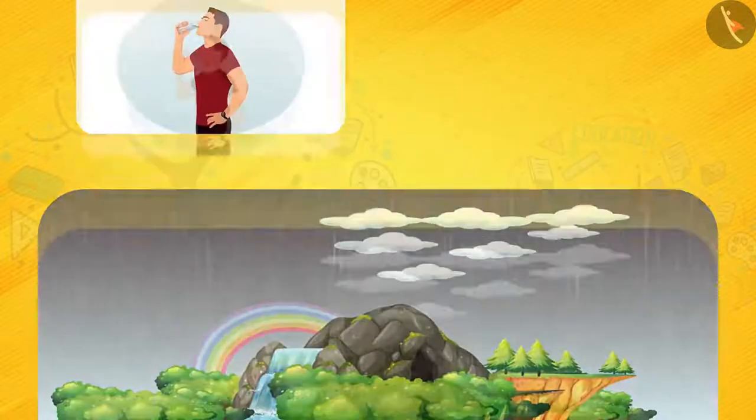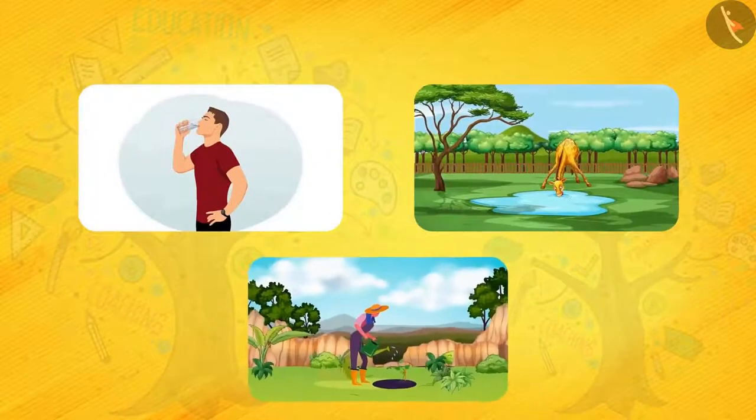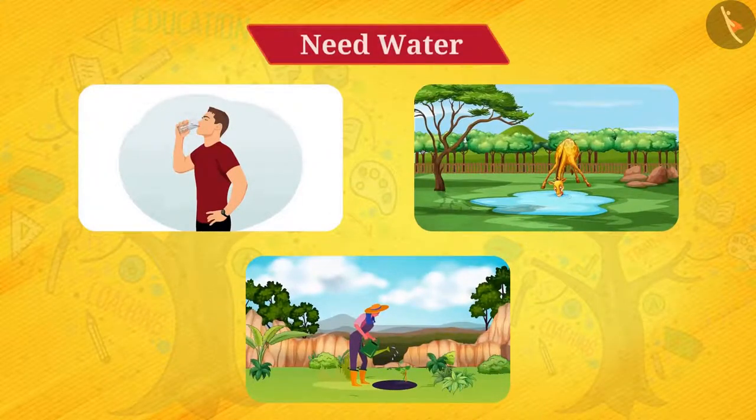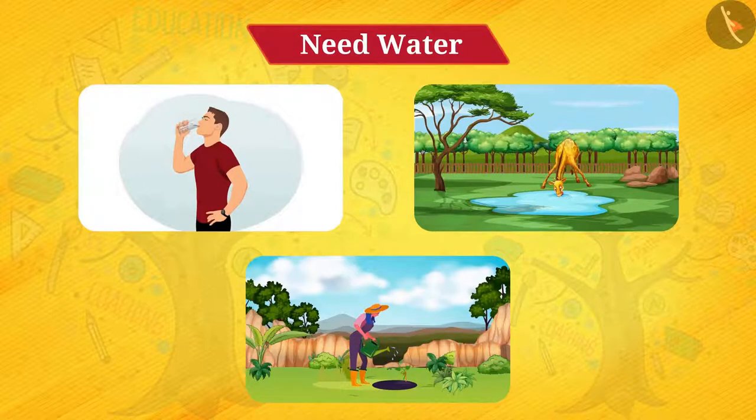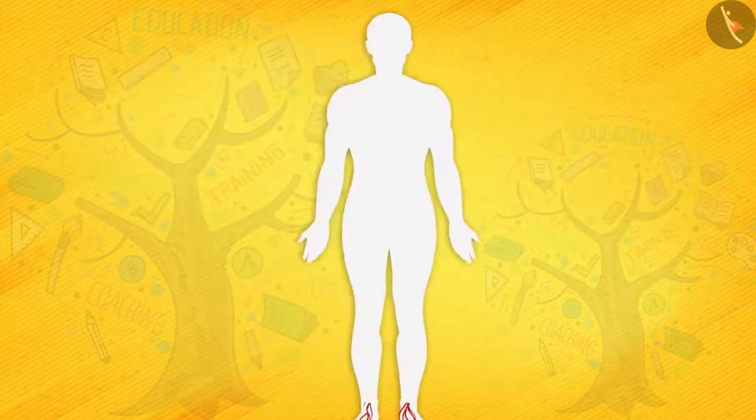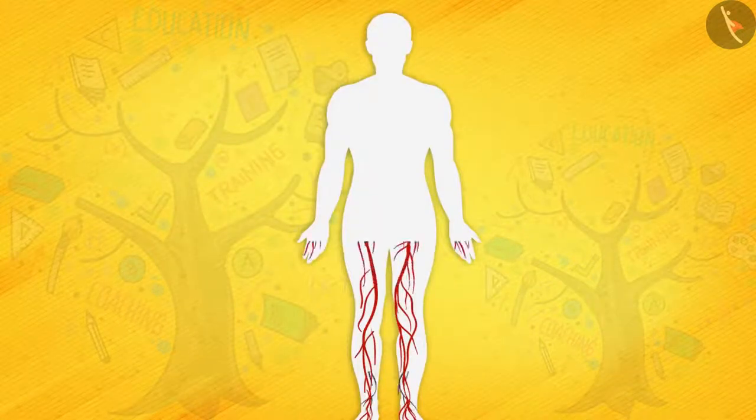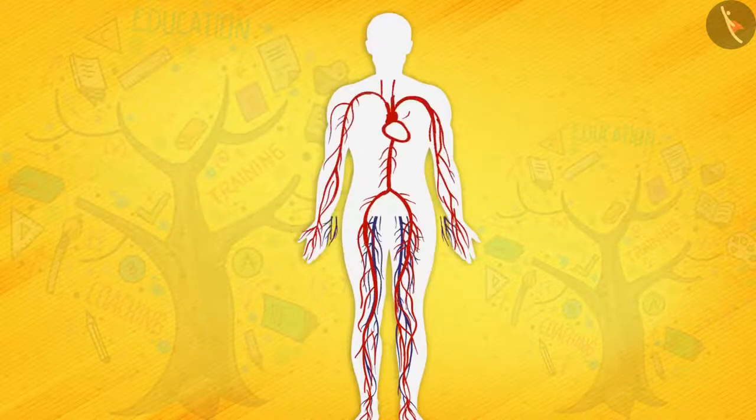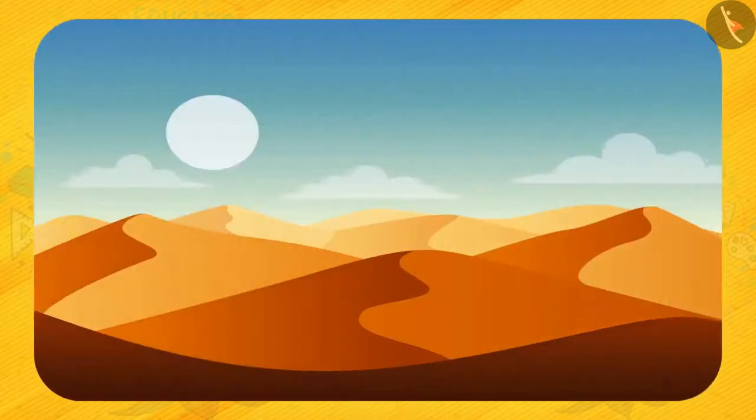Friends, it is well known that humans, animals, and plants all need water. Let us know how water is important for us. Water is essential for all living organisms as it is required for all cellular reactions occurring inside the body.